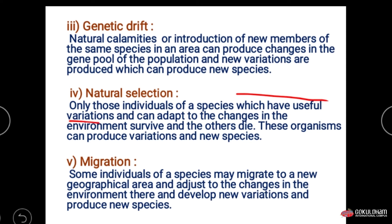New individuals can adapt to changes in the environment. In natural selection, only those individuals or species will survive which have useful variation that helps them adapt to changes in the environment, and this variation leads to the formation of new species.